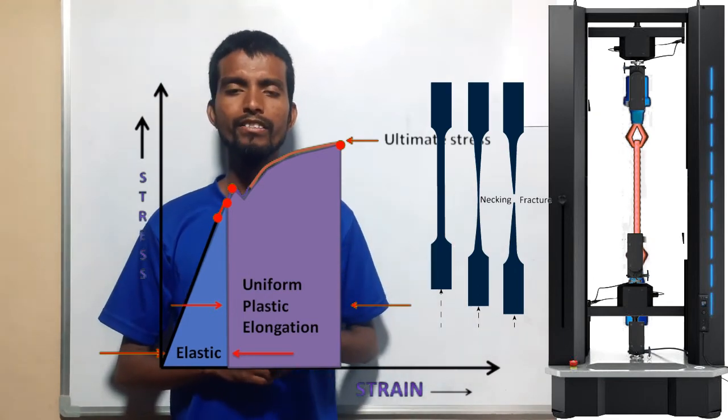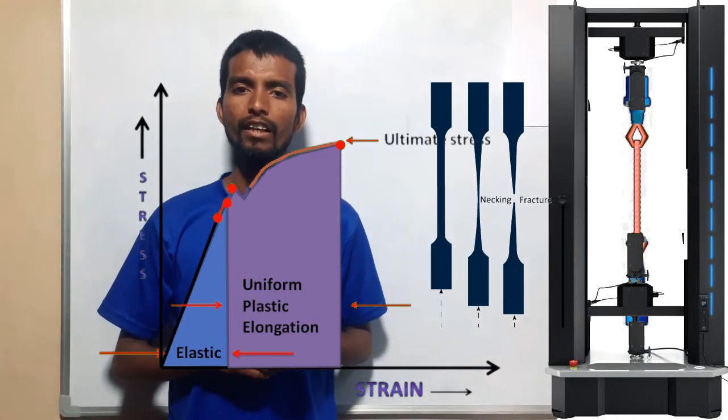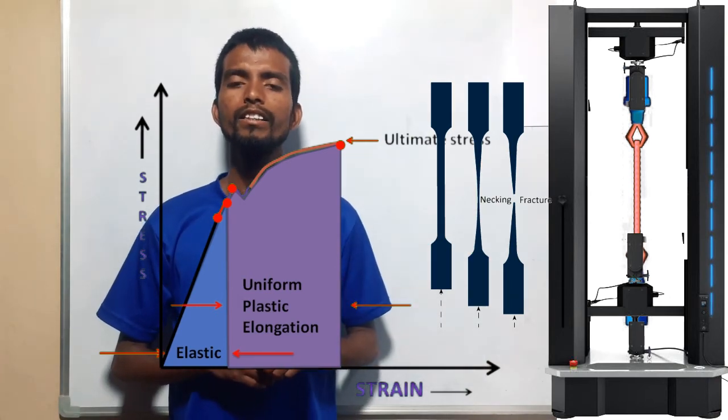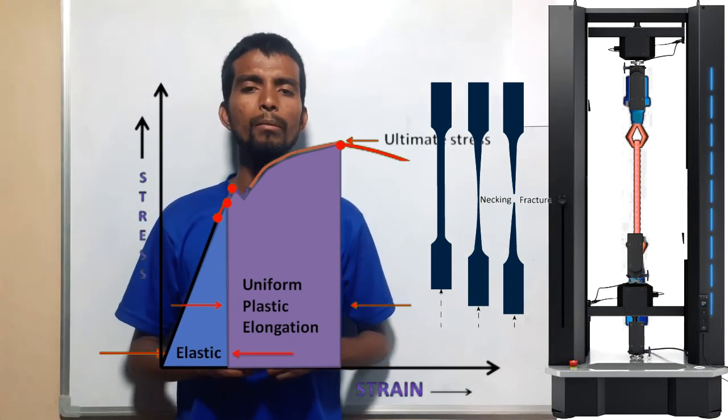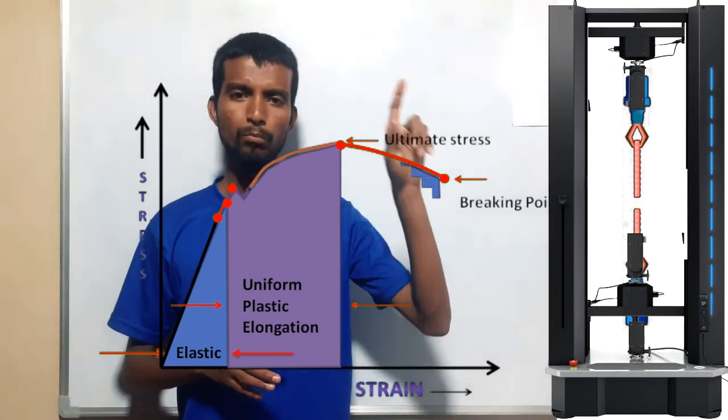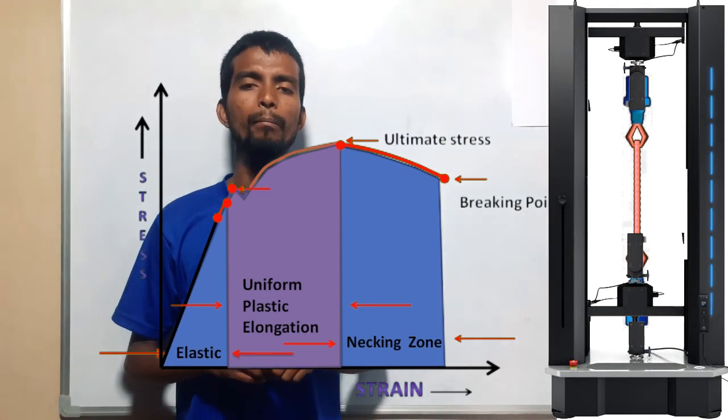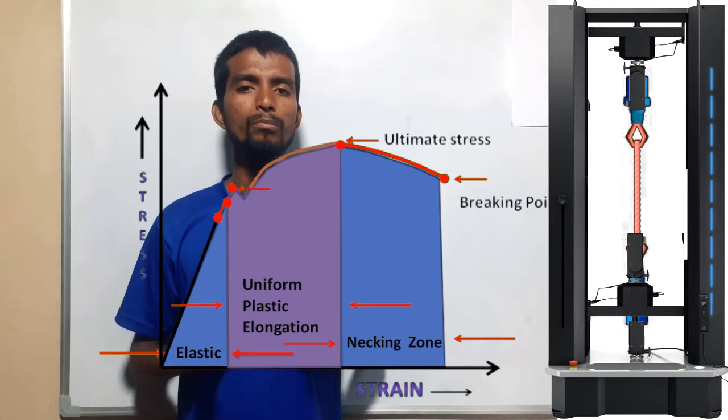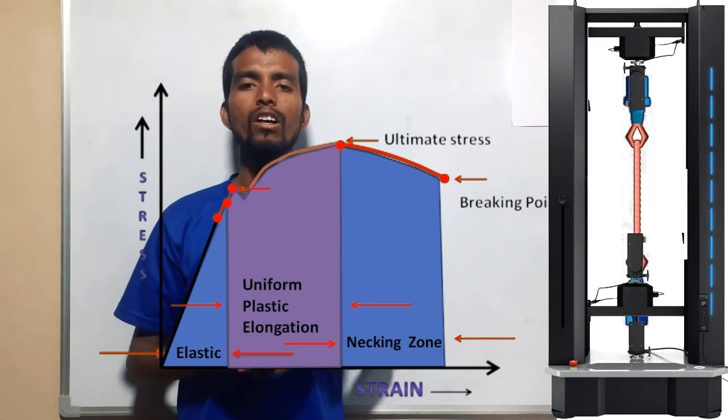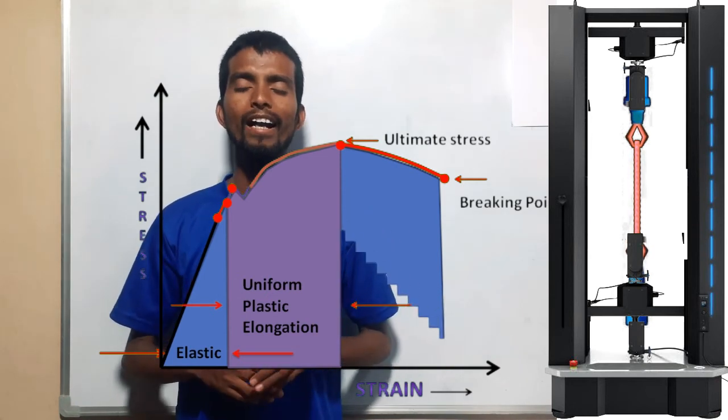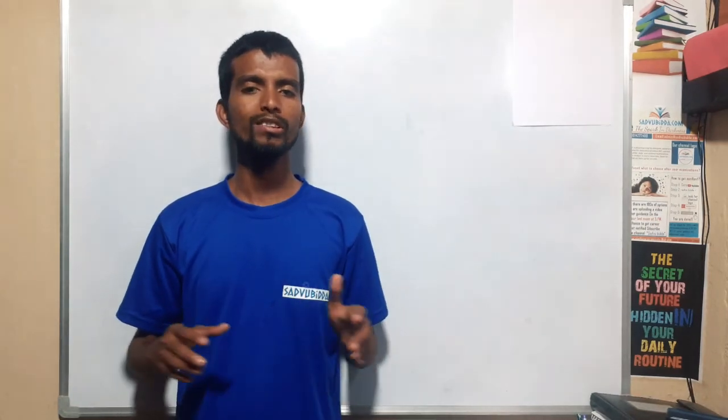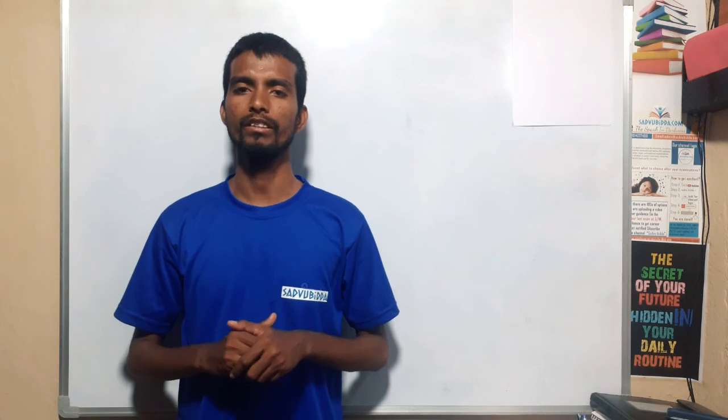After the necking zone, the material finally fails in the UTM machine. This point is known as the breaking point or rupture point where material actually fails or fractures, and this zone is known as the necking zone. So this is what a stress-strain curve actually is.